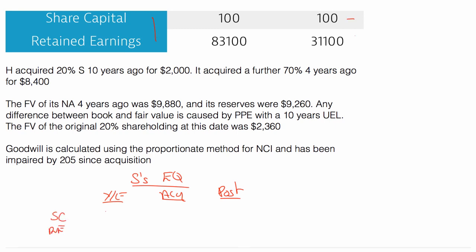So S is 100 and 3100. I presume that the at acquisition is the same for shares. And then I need to find out what the at acquisition date was: 20% 10 years ago, 70% 4 years ago. Therefore, the at acquisition date is 4 years ago. And here we go. The fair value in the assets was 9880, 4 years ago. And reserves were 9260. So that's the figure I want.